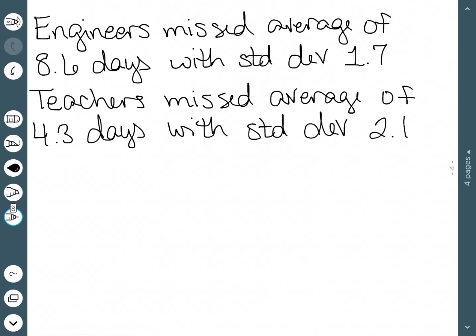Here we have some information that a group of engineers missed an average of 8.6 days with a standard deviation of 1.7, and we're referring to days missed of work. A group of teachers missed an average of 4.3 days, and their standard deviation is 2.1. We want to know which group actually varies more on their number of days missed. We're going to do this by finding the coefficient of variation. I'm going to put a little e at the bottom to indicate that this is the coefficient of variation for the engineers.